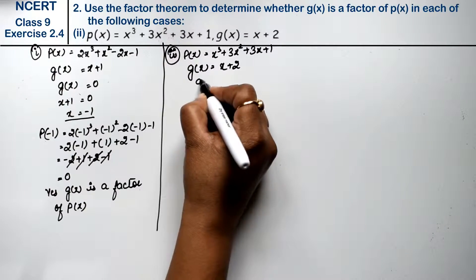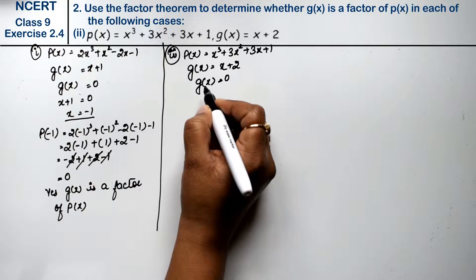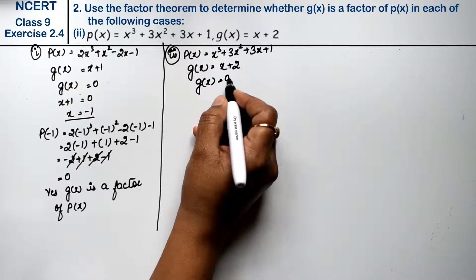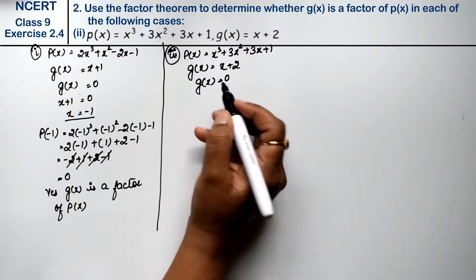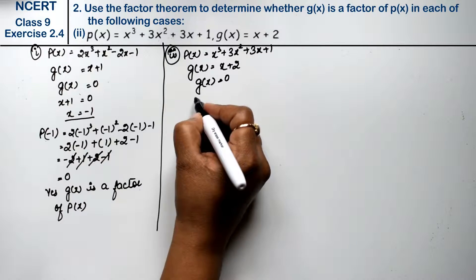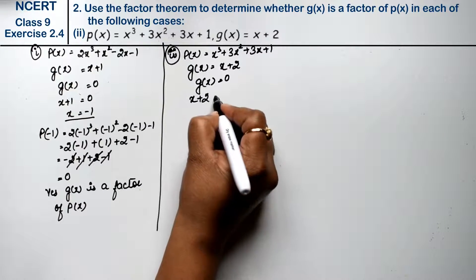Now, g(x) = 0. We put it in the factor theorem, which we have to prove whether it is a factor or not. So x + 2 = 0, so x value is -2.